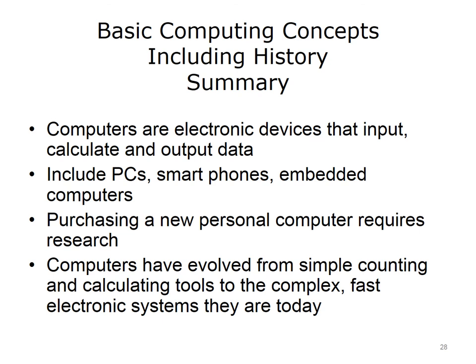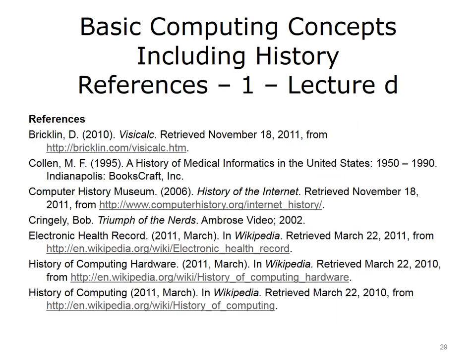In summary, this unit defined computers as electronic devices that input, calculate, and output data. Computers include not only personal computers, but also smartphones and the computers that are embedded in most electronic devices today — some examples are appliances, automobiles, and DVD players. Purchasing a new personal computer today requires doing some research. First, the buyer needs to consider what applications will be running on the computer, which will help determine options like the video card, monitor, amount of memory, and hard disk. Then, the buyer needs to set a budget. Online sites provide reviews and buying guides to help determine the best system for the buyer's budget. Finally, the computers of today evolved over hundreds, even thousands, of years from the simplest tools for counting to the complex systems they are today. Thank you.